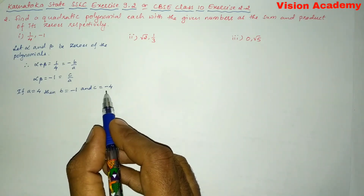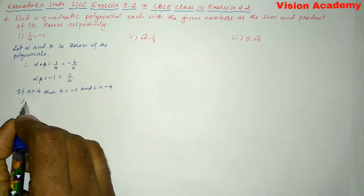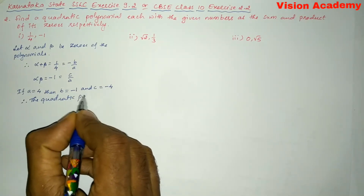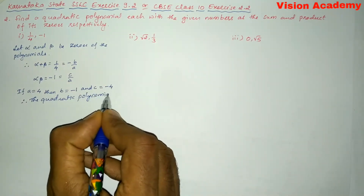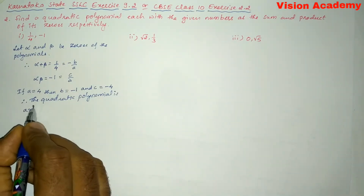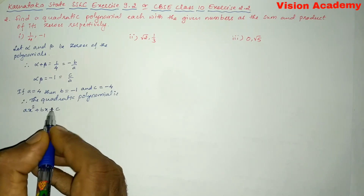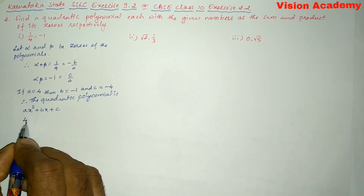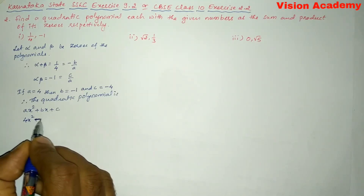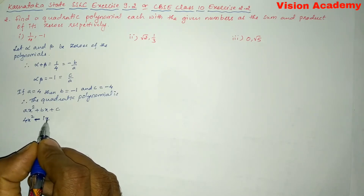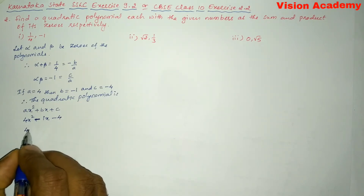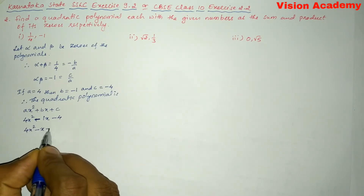Therefore, the quadratic polynomial is — the general formula of a quadratic polynomial is AX squared plus BX plus C. Here A value is four, B value is minus one, and C is minus four. So we can write four X squared minus X minus four.